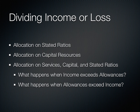In the allocation of stated ratios, income or losses are divided equally among the partners as per a predetermined ratio. In the allocation of capital balances, the percentage of the business each partner owns determines the income or loss allocation — so if a partner withdraws 10% of their capital, their allocation is also reduced by 10%. In the allocation of services, capital, and stated ratios, this is more complex but more fair: allocation is based on how much time or service is given to the business, as well as the amount of capital invested, with a minimum stated ratio added as a final backstop.